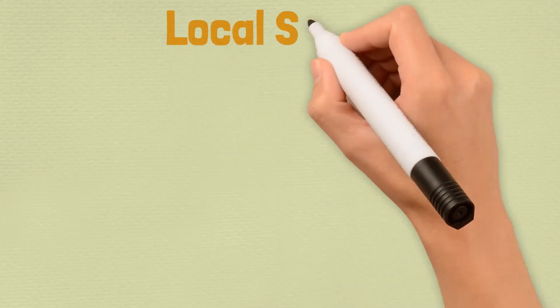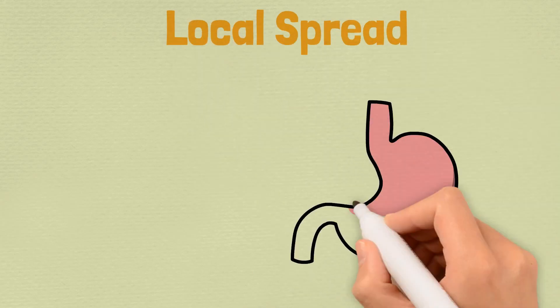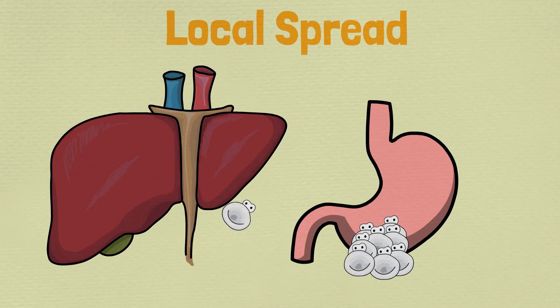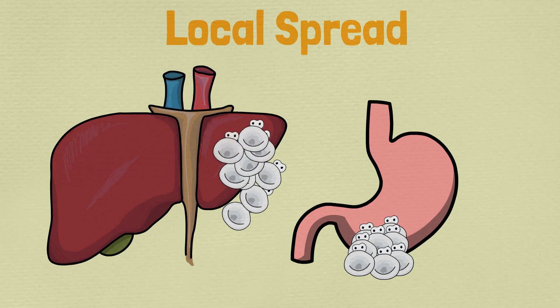The third way is local spread. Cancer cells breach the tissue border of the affected organ to spread locally. Some cancer cells also travel via the space around the organs and form tumour growth on and in other proximal organs of the body.